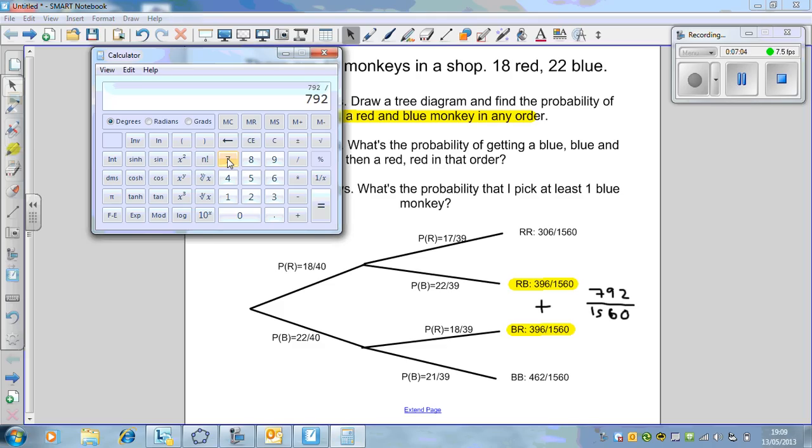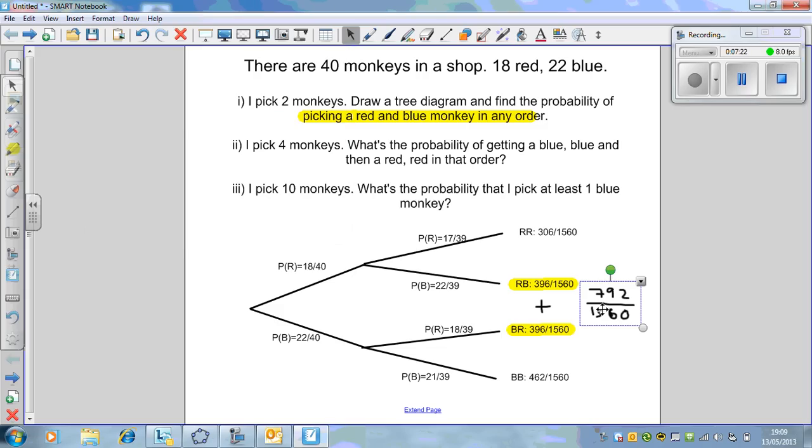Use your calculator to simplify that fraction. The calculators you've got, whether Casio or Sharp, will do the simplification for you. That's the first question. Picking two monkeys, draw a tree diagram. A tree diagram works fine for that because there's only two monkeys we're picking out.